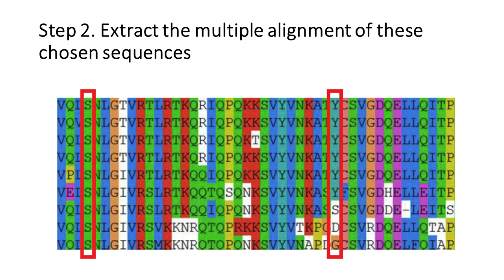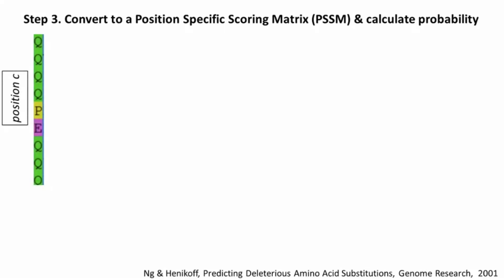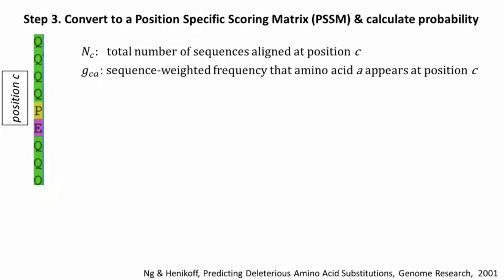As you can see in this example alignment, some positions are highly conserved whereas others are more variable. In step 3, SIFT converts the multiple sequence alignment into a position-specific scoring matrix and calculates the normalized probability of seeing a particular amino acid in nature. For example, here we have the aligned amino acids at position C.